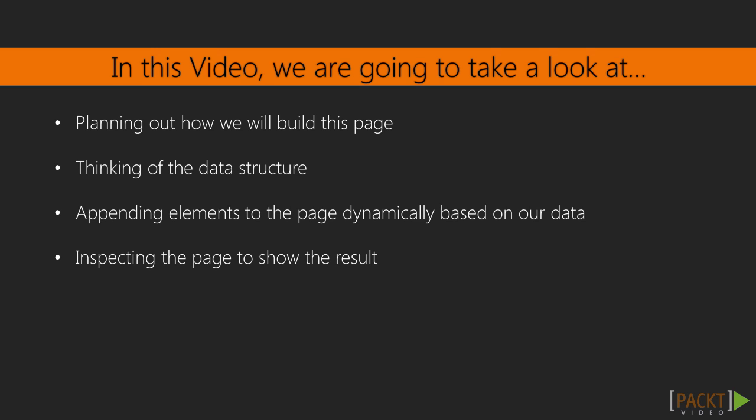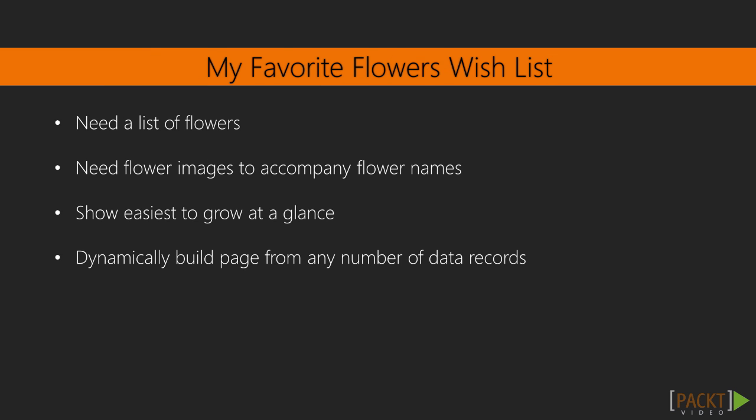We'll wrap up by inspecting these elements in the browser and show that the code we just wrote is working, though we won't yet see any output on the page itself. Let's start planning the page by writing down the things we would like the page to have — this will help inform our data structure. First, we'll need some sort of list for each of the flowers.